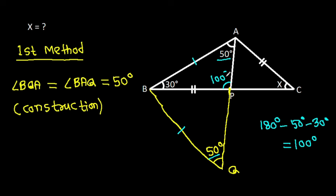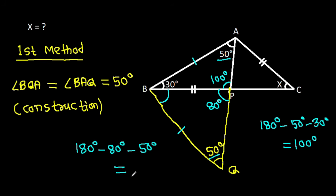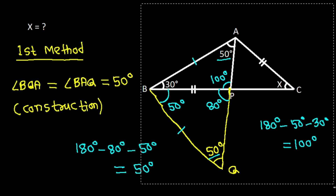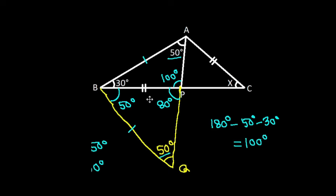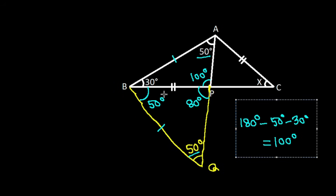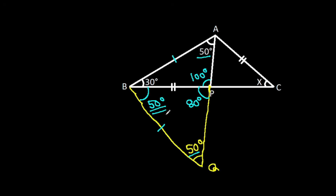It is 100 degrees. So this angle will be 80 degrees. And this angle will be 180 degrees minus 80 degrees minus 50 degrees, that will be 50 degrees. These two angles are equal, so BP will be equal to PQ.